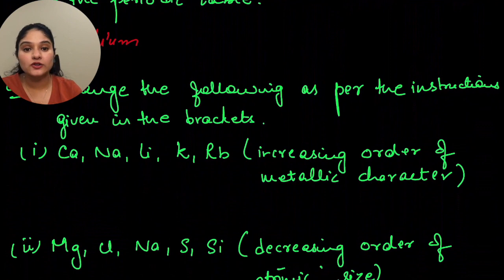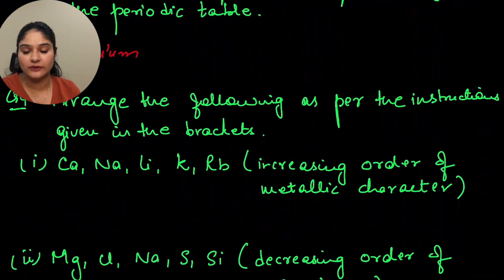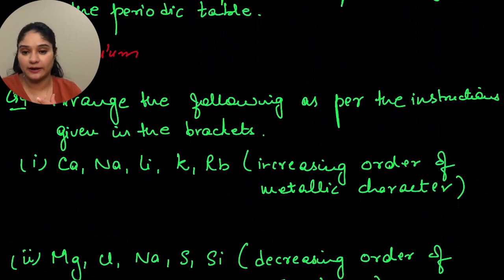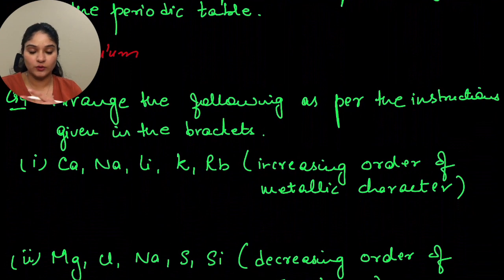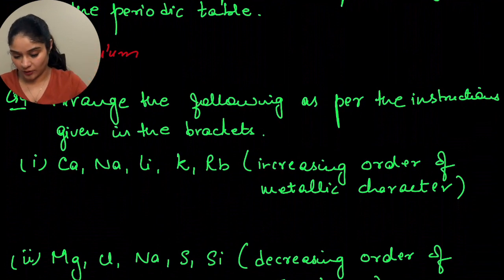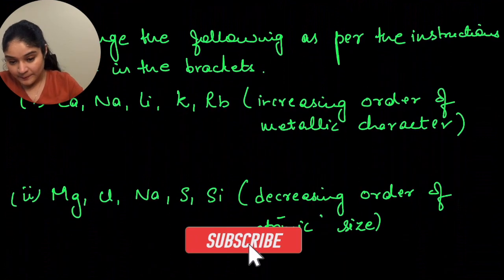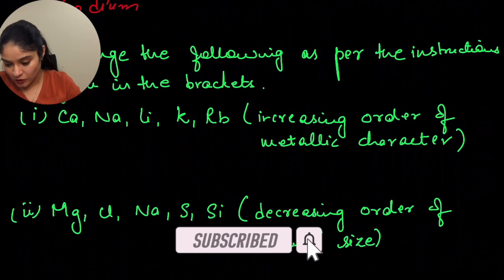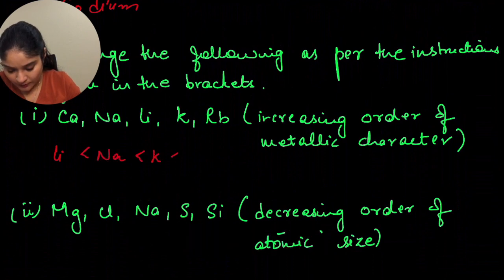Next: arrange the following in increasing order of metallic character. Metallic character is a tendency to lose electrons — it will increase if the tendency to lose electrons is higher. For this first case, your answer will be: lithium, sodium, potassium, rubidium, and cesium.